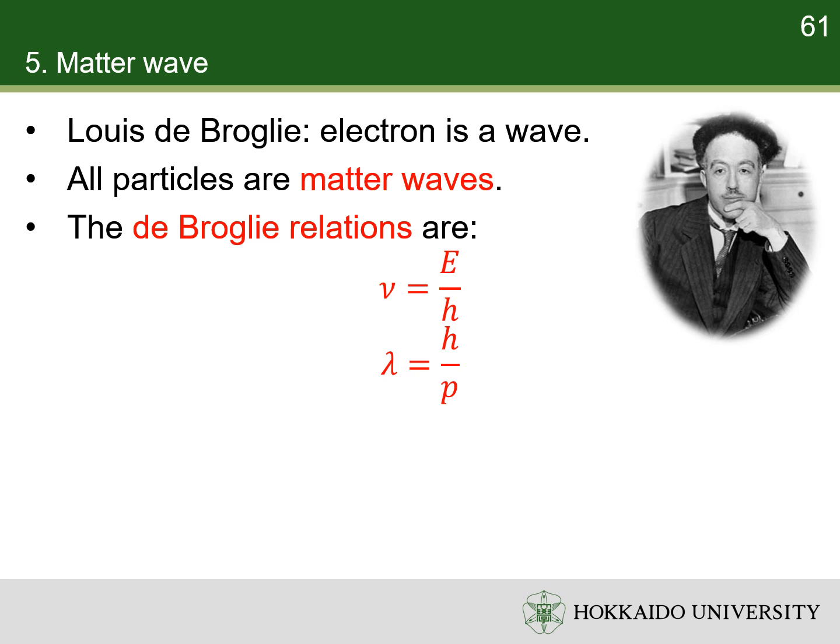They are essentially the same as the relations for photons shown by Planck and Einstein. The de Broglie relations have since been shown to hold for all types of matter; that is, all matter exhibits properties of both particles and waves.